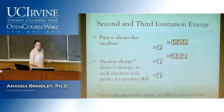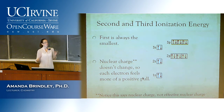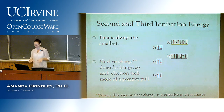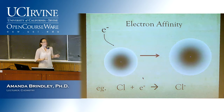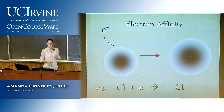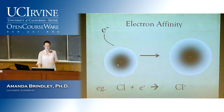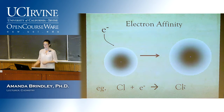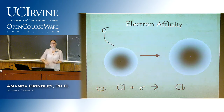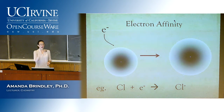That wraps up ionization energy. Now electron affinity — it's the opposite of ionization energy. With ionization energy, we had an atom and took away an electron. With electron affinity, we want to know how likely an atom is to take on an electron. For example, chlorine taking on an electron to become chloride minus. With ionization energy we were making cations; with electron affinity we're adding electrons and making anions.